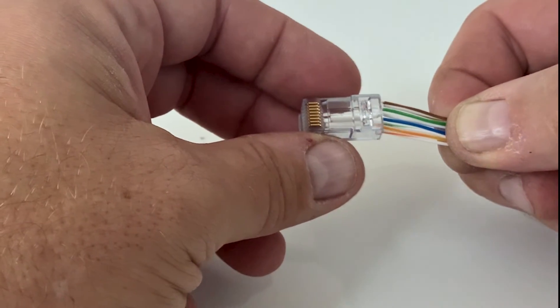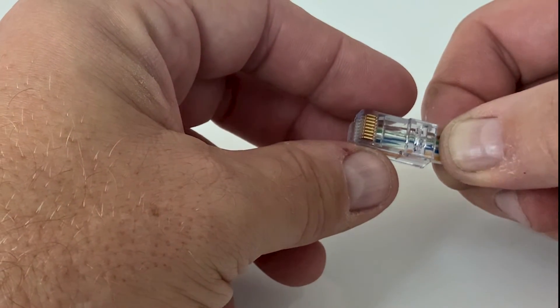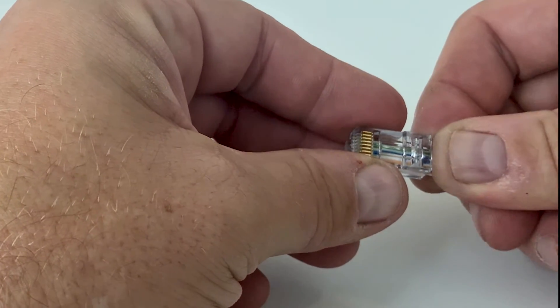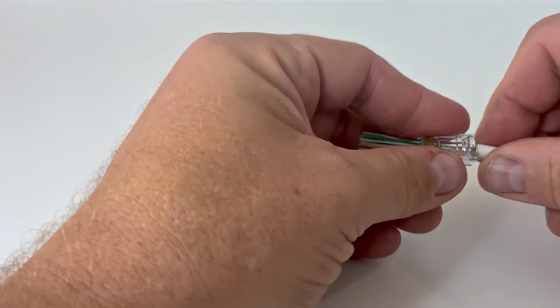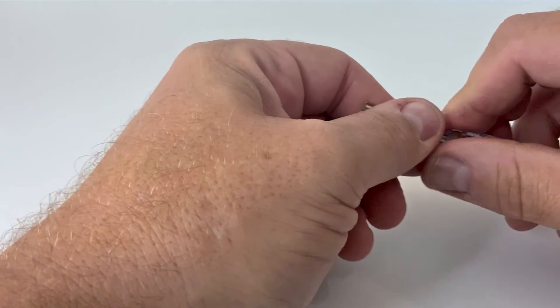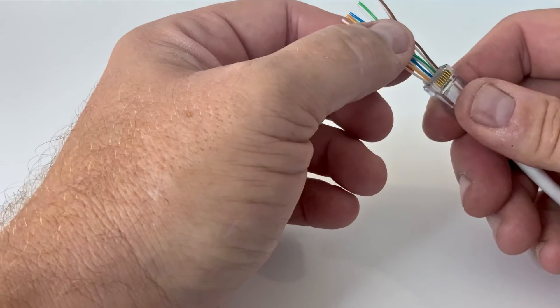You'll then gently insert all the wires into the EZRJ45 connector, pulling the connector down over the cable jacket. The cable jacket should be seated snugly into the rear of the connector. Don't get discouraged if you don't get this right on your first try. It can take some practice.